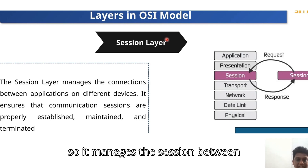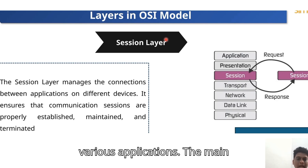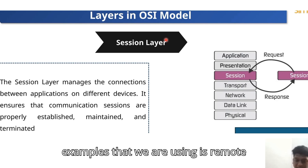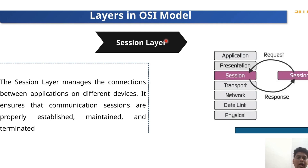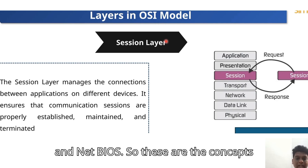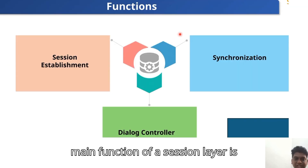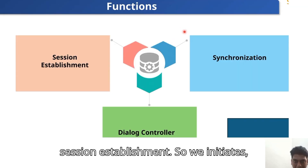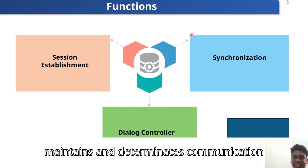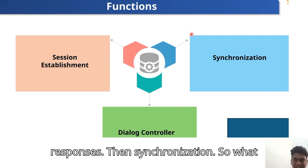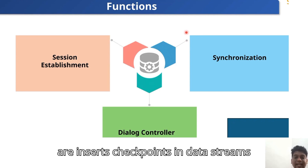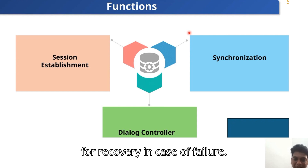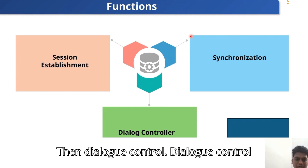The Session layer manages sessions between various applications. Examples include Remote Procedure Call (RPC), SQL session control, and NetBIOS. Its key functions are: Session establishment — initiating, maintaining, and terminating communication sessions; Synchronization — inserting checkpoints in data streams for recovery in case of failure; and Dialogue control — determining whether communication is half-duplex or full-duplex.